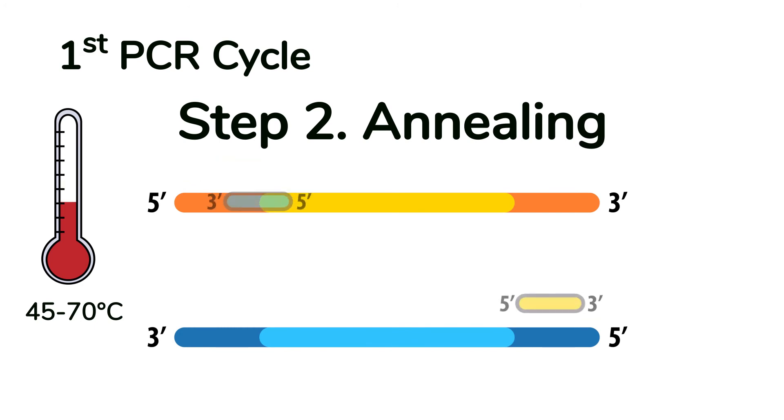The annealing step allows the primers to bind to their complementary regions on the single-stranded DNA templates. During the annealing step, the test tube is cooled to a temperature of about 45 to 70 degrees Celsius, depending on the sequence of the primers.